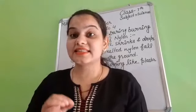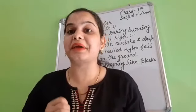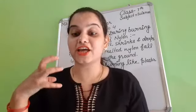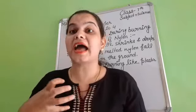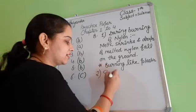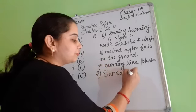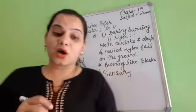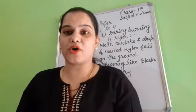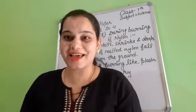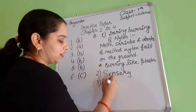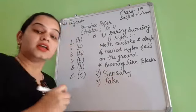Second question: sense of touch is a dash estimate of temperature. Jab hum touch karte hain sense organ se, toh voh kis type ka estimate hota hai? That is sensory — sensory estimate of temperature. Third question: the product of photosynthesis is carbohydrate — is it true or false? Yes, it is false. Because the product is glucose — voh hamara glucose hota hai. So, third one is false.